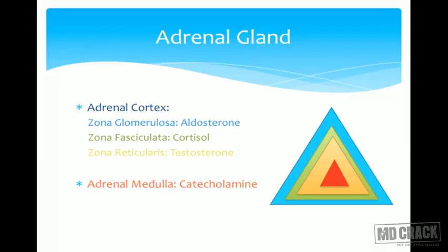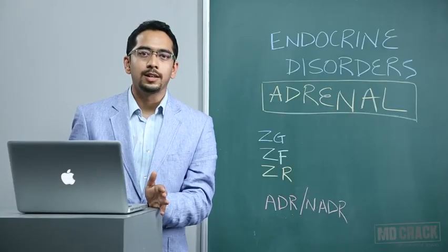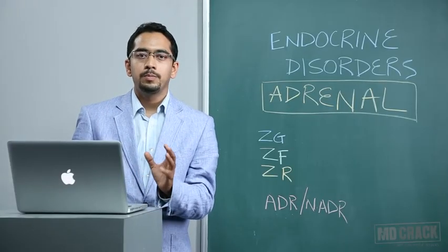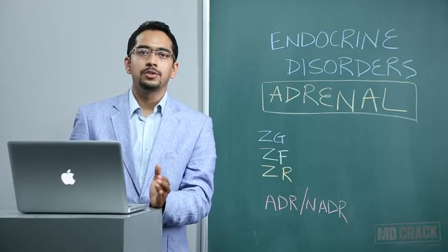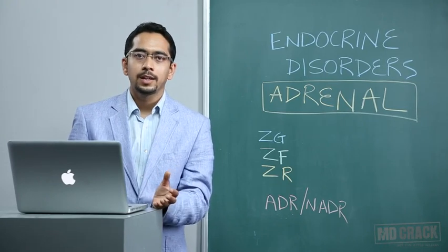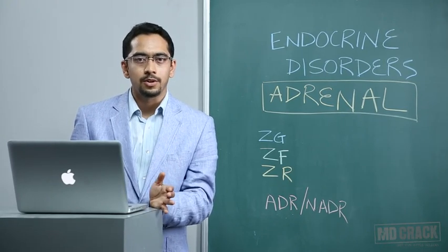The adrenal medulla, which comprises almost one-tenth of the adrenal gland, is responsible for production of various catecholamines — chemicals derived from tyrosine. Tyrosine gives rise to dopa, then dopamine, noradrenaline, and adrenaline. The predominant secretion of the medulla is adrenaline, and in some quantities also noradrenaline.